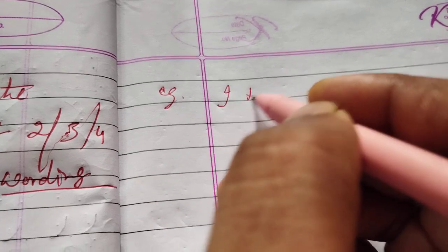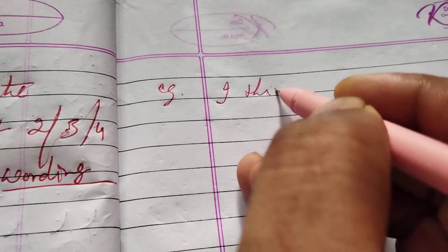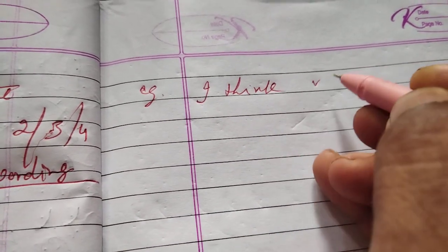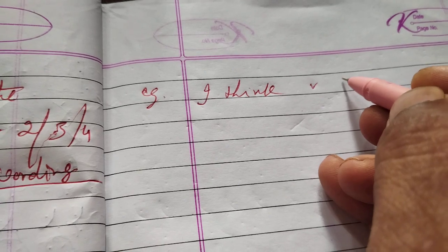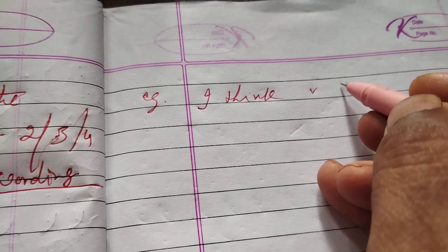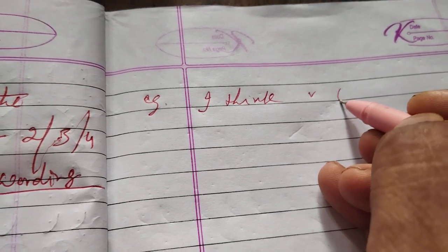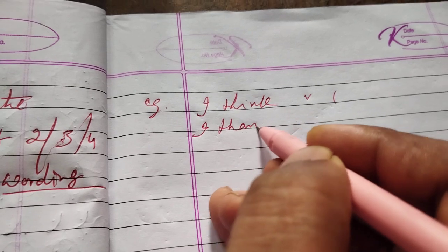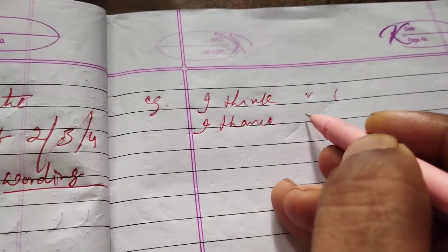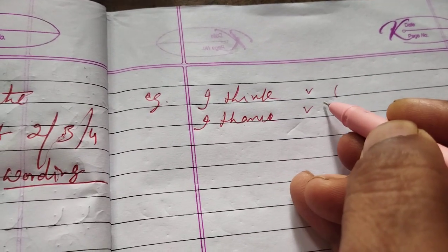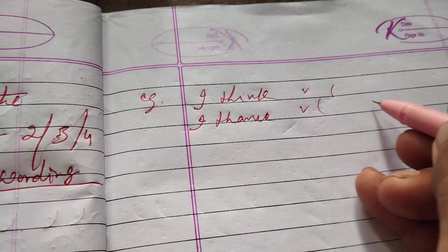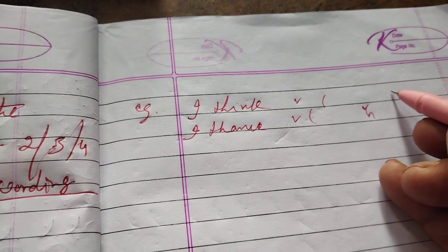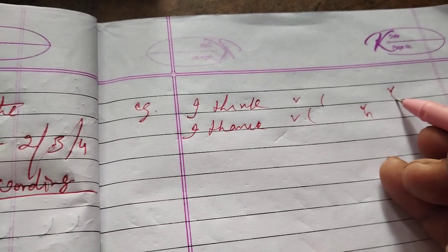I think. Here, 'I' is generally above the line; 'think' means on the line. 'I thank' — above the line. You are careful: after 'I thank you,' I think.